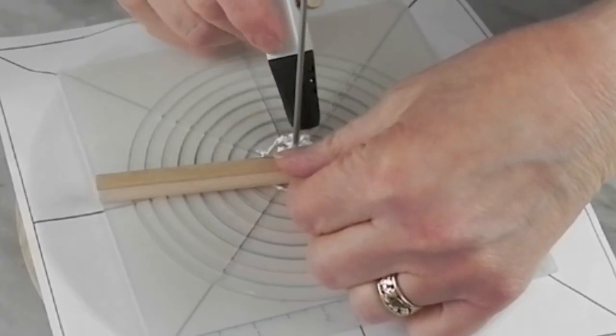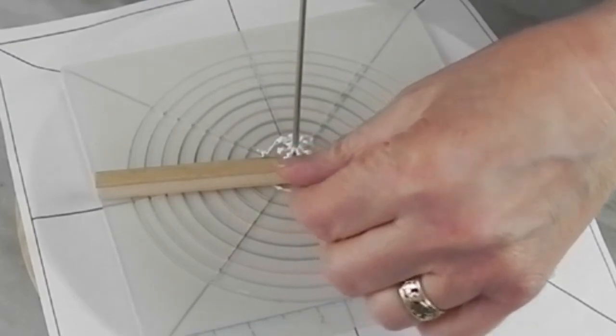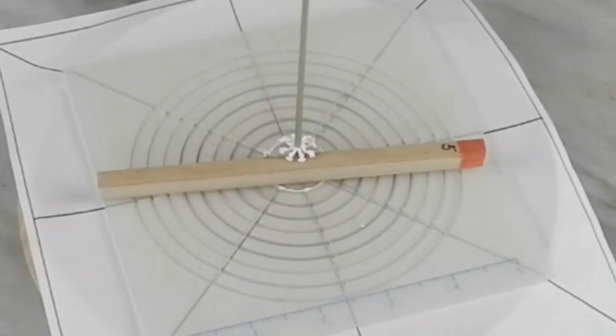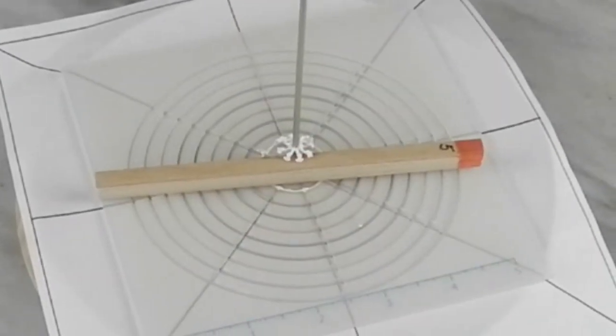Once you remove the spacer, the top circle just stays up there and you can go around and finish all the other connections.